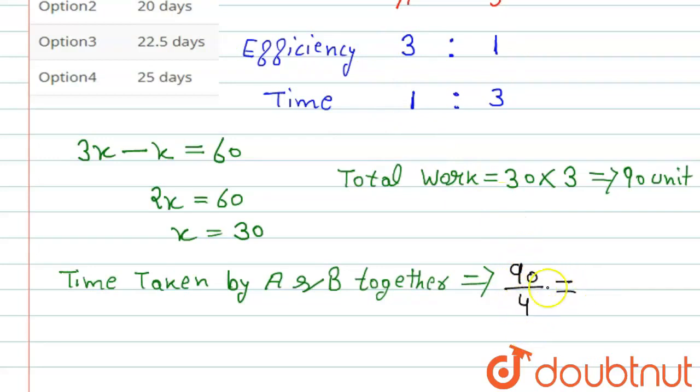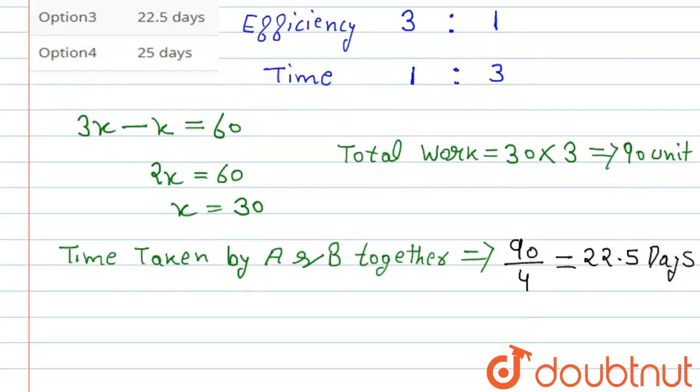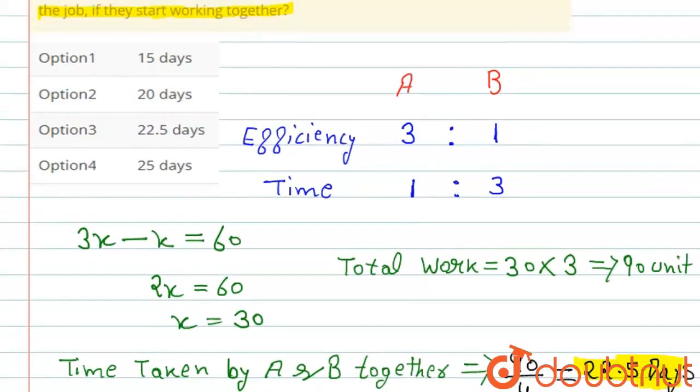90 divided by 4, that is equal to 22.5. So 22.5 days. This is our final answer. I hope you understood. Now we will check the option. Option 3 is correct. That is 22.5 days. Thank you.